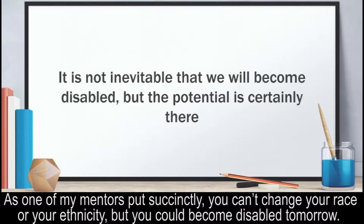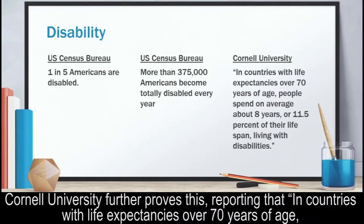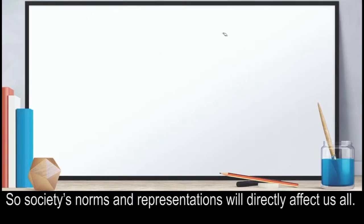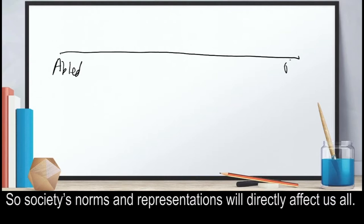But you could become disabled tomorrow. Cornell University further proves this, reporting that in countries with life expectancies over 70 years of age, people spend an average of about 8 years, or 11.5% of their lifespan, living with disabilities. So society's norms and representations will directly affect us all.